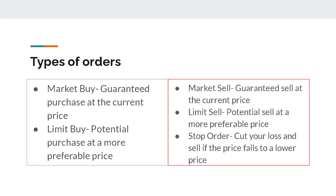You also want to know the types of orders you can make when trading. When buying, you can market buy — a guaranteed purchase at the current price — or limit buy, which is a potential purchase at a more preferable price. For example, if the price goes from $5 to $4 and you had a limit buy at $4, you'd get an entry at that lower price. When selling, you can market sell — a guaranteed sell at the current price — limit sell, which is a potential sell at a more preferable or higher price, or place a stop order.